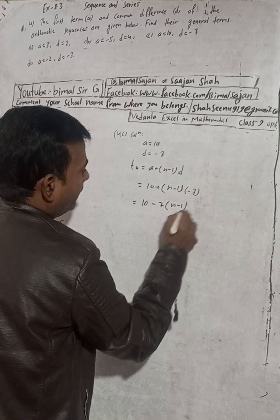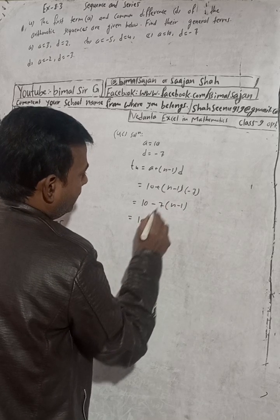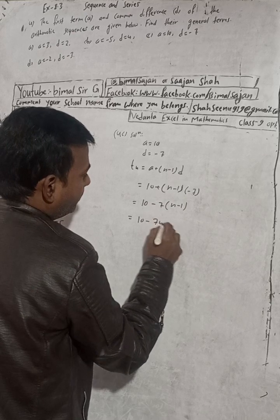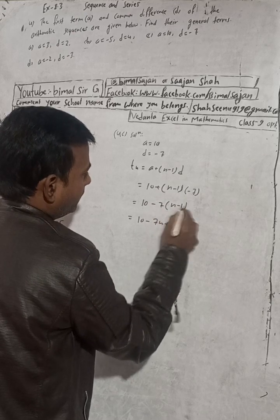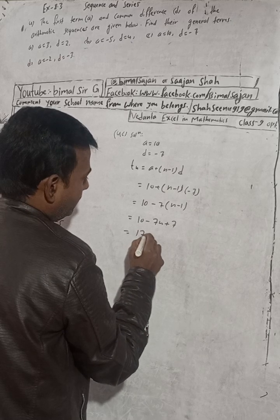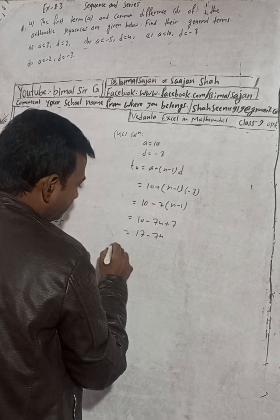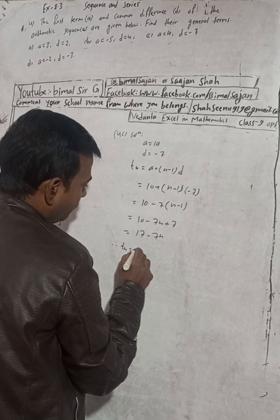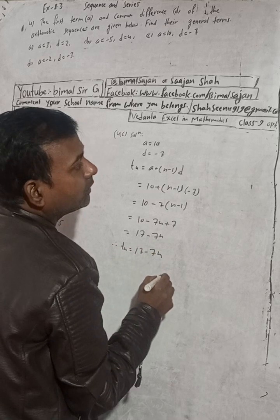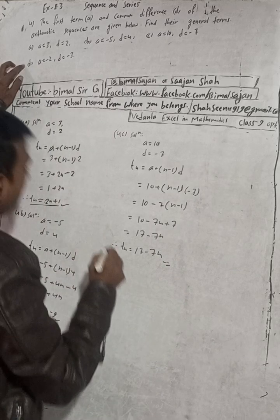This becomes 10 minus 7 into N minus 1. So 10 minus 7N plus 7, which is 10 plus 7 equals 17, minus 7N. Therefore Tₙ = 17 minus 7N.